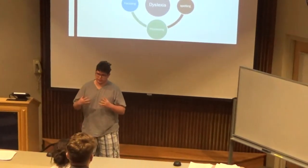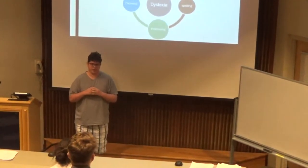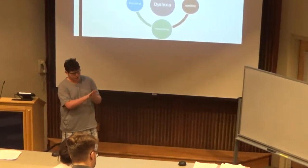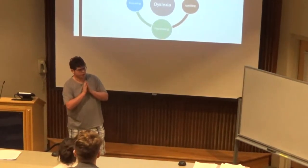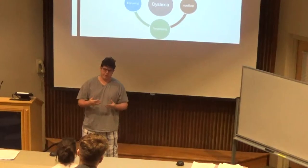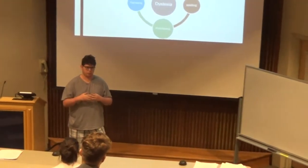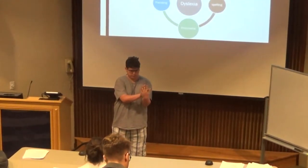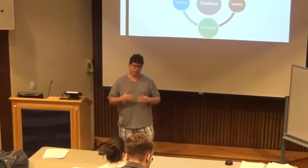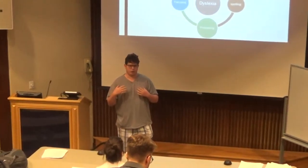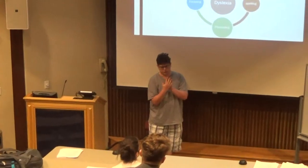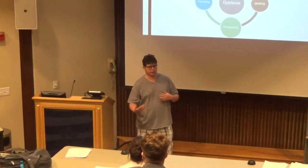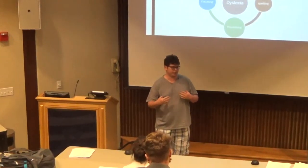The first one we're going to talk about is dyslexia. Dyslexia, if you don't know what it is, it is a processing disorder. Basically, when you're reading something, it flips it when it goes into your brain. It's very hard to understand how text is being presented to you. It also affects how spelling works, because it does the same thing, just backwards. That's one of the main things that dyslexia influences and how it affects us during our daily lives.